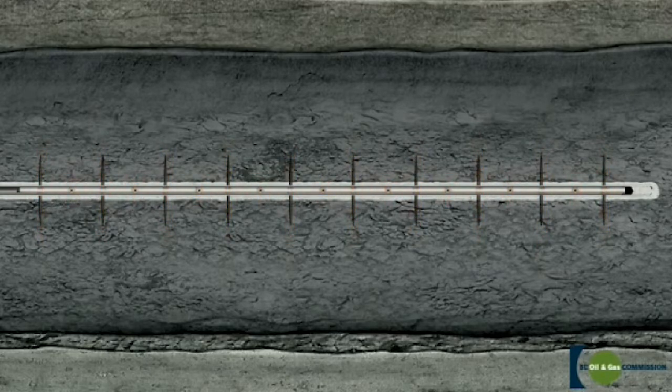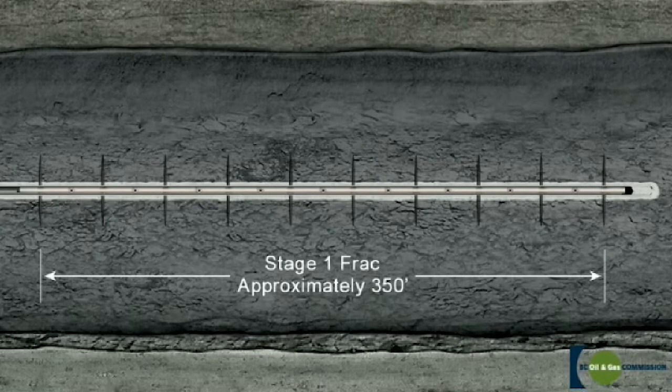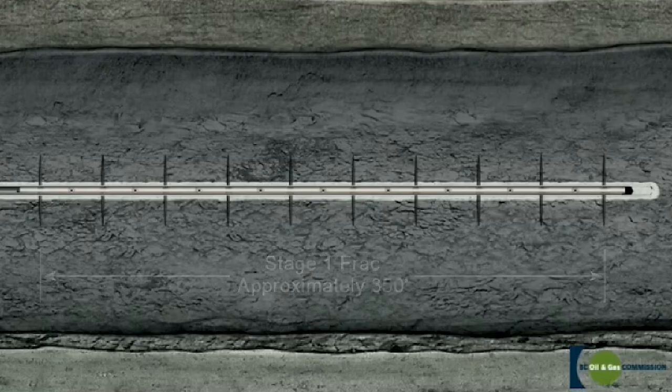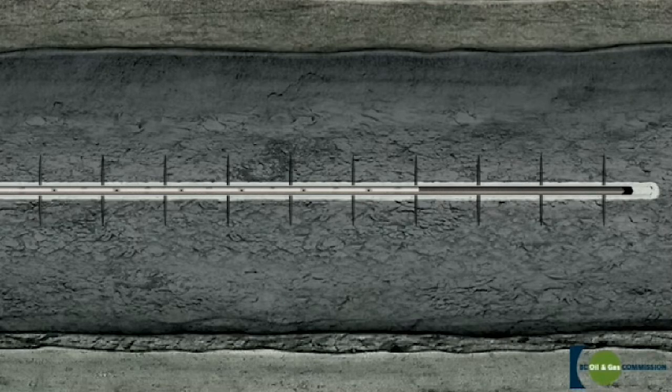An electrical current is sent down the wire line to the perf gun and sets off a charge that shoots small holes through the casing and cement and out a short distance into the shale formation. The perf gun is then pulled out of the hole.